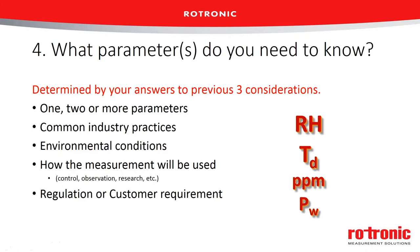It's important to think about and understand what parameter you have to report, and what parameter the instrument is outputting. It's also important to know how the instrument gets that measurement — does it calculate it or is it an actual direct measurement? Choosing the parameter builds on the previous three sections, and all nine questions build on each other as you go through the process.